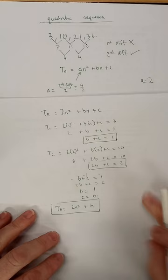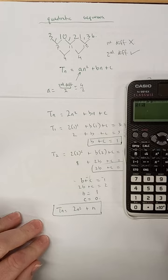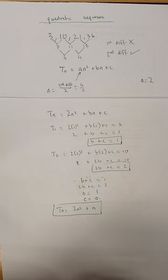To verify, check the fourth term: 2(4²) + 4 = 32 + 4 = 36. That's correct! That's how you find and check the formula for a quadratic sequence. It's not the hardest, not the easiest, but if you follow this method you'll always get it right.